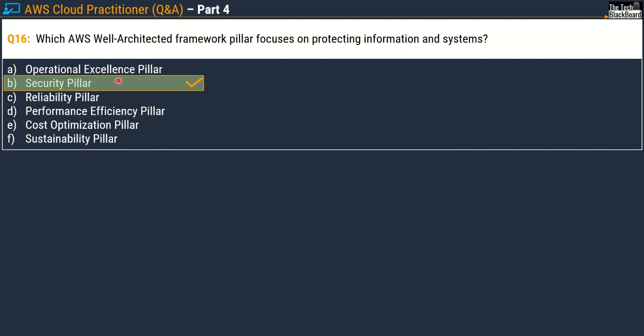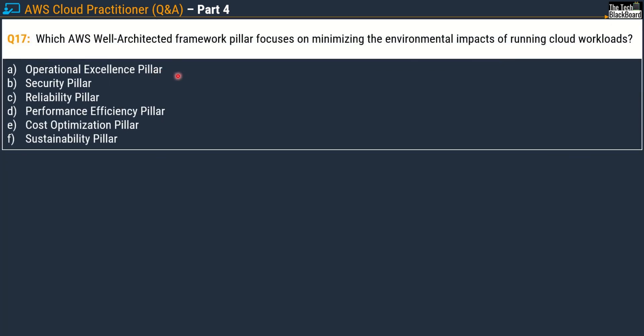Let's take one question from each pillar and I'll help you understand each of the six key pillars. Question 17 asks: which AWS Well-Architected Framework pillar focuses on minimizing the environmental impacts of running cloud workloads?